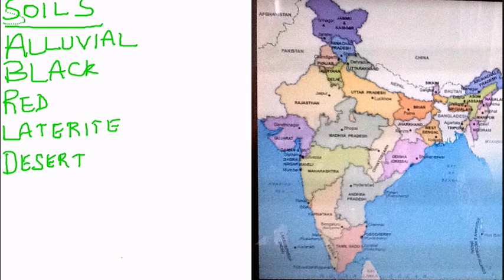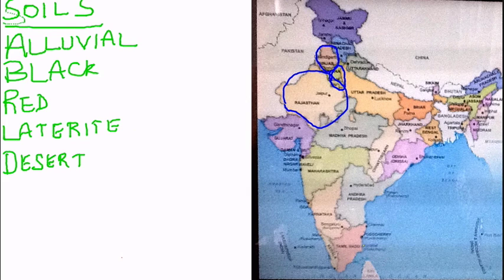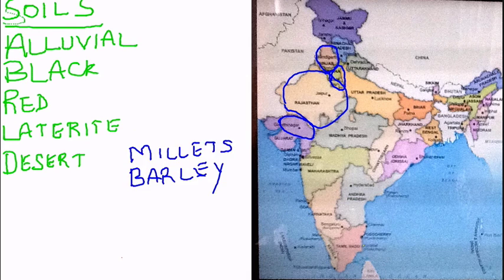The next soil is the desert soil, which contains soluble salts originating due to mechanical disintegration and wind deposit. It is porous and coarse in nature, containing 90% sand and 10% clay. The soil is rich in nitrates and phosphates but poor in nitrogen and humus. It spreads across 1.4 lakh square kilometers, covering arid and semi-arid regions of Rajasthan, south Haryana, Punjab, and northern Gujarat. The crops grown here are millets and barley.